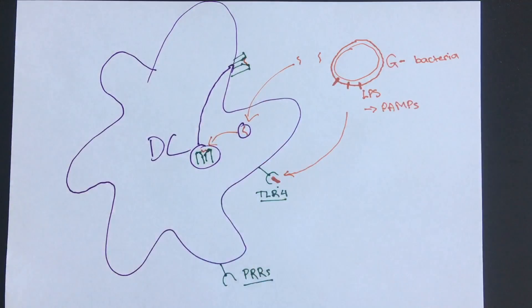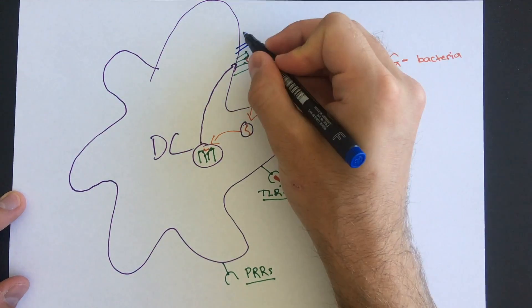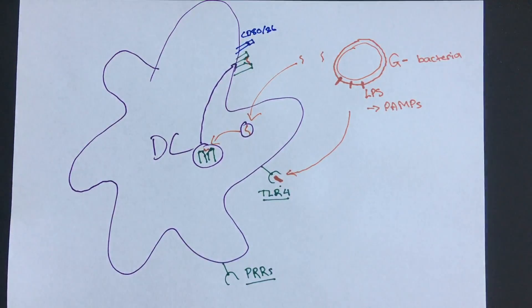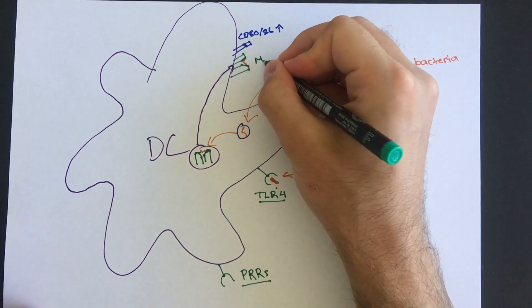In addition, part of the process includes upregulating co-stimulatory molecules on the cell surface. Now these are really important and we will come to them a bit later, but for now just know them as CD80/86.